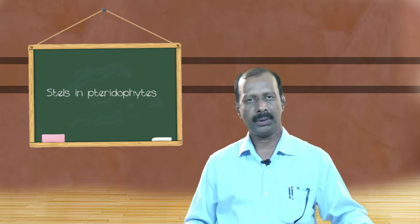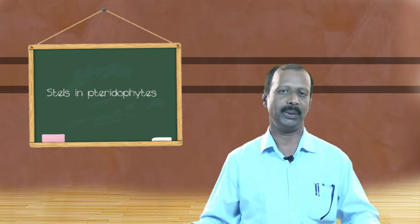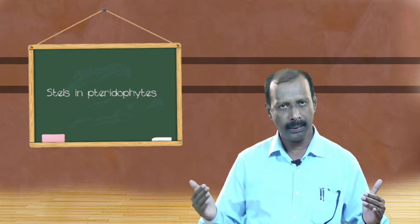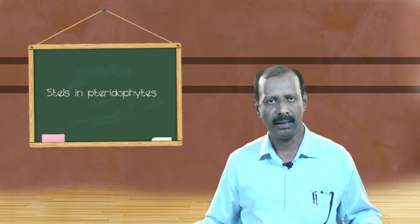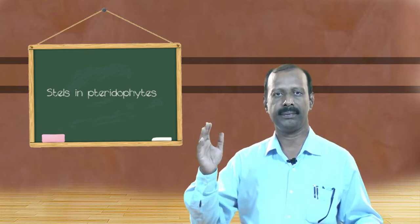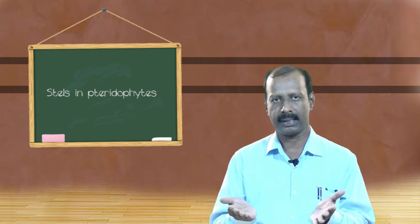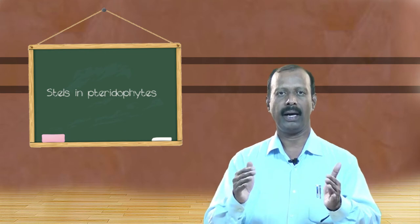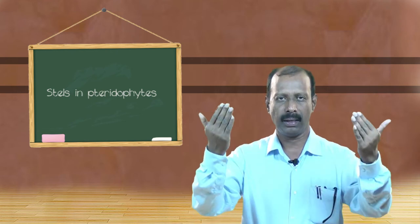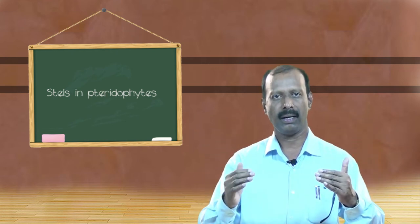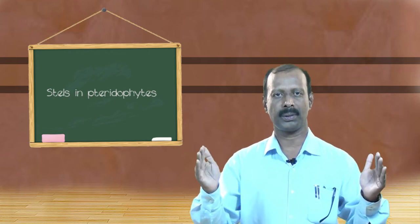In solenostele, we can see two types. The first one is ectophloic solenostele, and the second one is amphiphloic solenostele. This classification is based on the arrangement of the phloem cells. Suppose the phloem cells are found outside the xylem, then it is ectophloic solenostele. If the phloem is found both on the outer surface and inner surface of the xylem core, then it is amphiphloic solenostele.